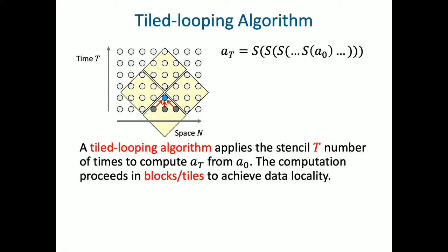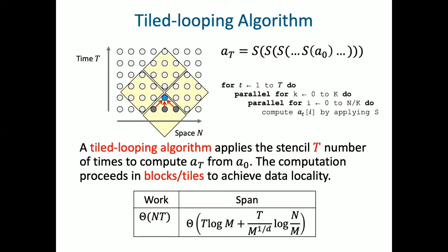The existing libraries try to improve the parallel running time by carefully matching the hardware cache parameters using the tiled looping algorithm. These implementations have better cache complexity and data locality compared to naive looping-based implementation, but the work remains the same, which is theta(nt).